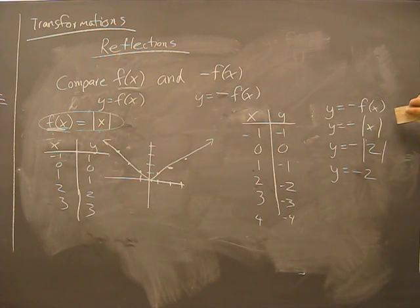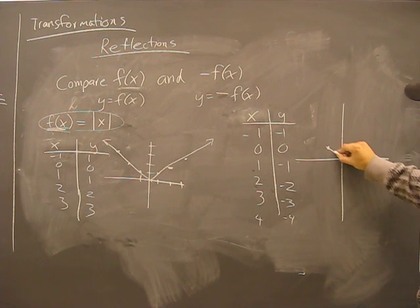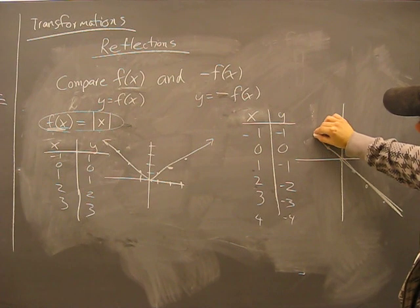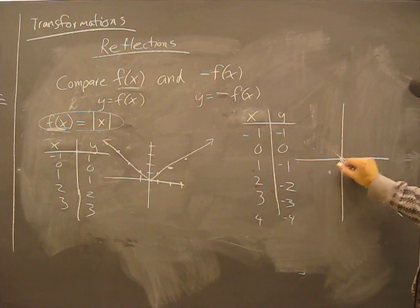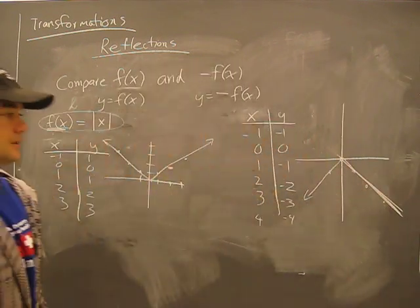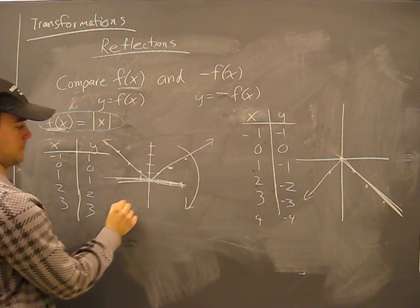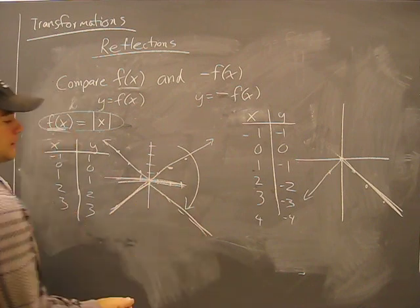Now let's graph this thing. Our points are: negative one, negative one; zero, zero; one, negative one; two, negative two; three, negative three. So this is our new graph. It's as though we stuck a mirror on the x-axis line and reflected it down to the bottom side.